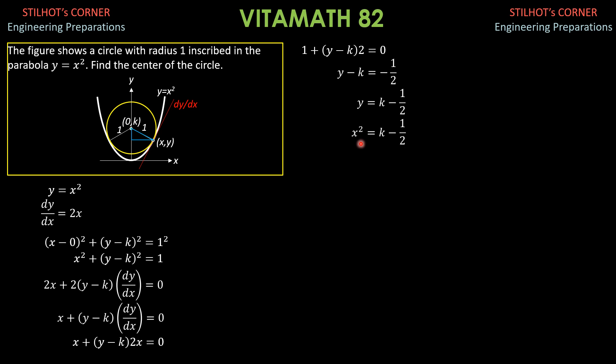So, x square equals k minus 1 half, and x square is, or k minus 1 half, which is x square from this equation, then y minus k is negative 1 half. So, negative 1 half plus negative 1 half quantity square equals 1. So, simplifying, k minus 1 half plus 1 fourth equals 1. 1 plus 1 half is 3 halves. 3 halves minus 1 fourth is 5 fourths. Or 1 plus 1 half is 1 and 1 half minus 1 fourth.